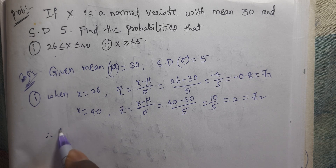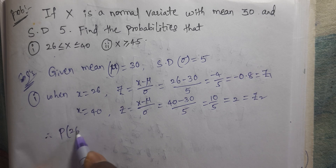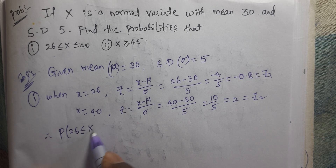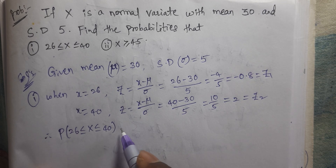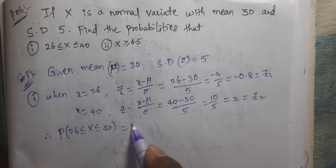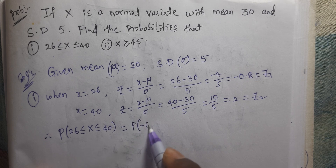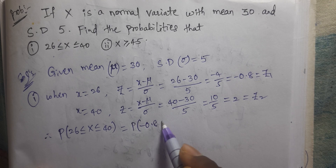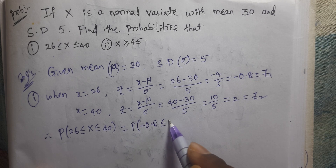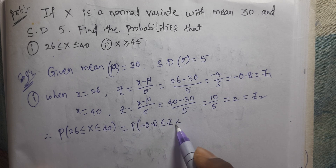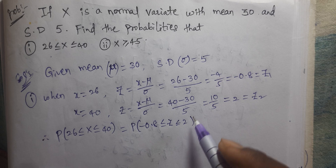Therefore, probability of 26 less than or equal to capital X less than or equal to 40 is equal to probability of minus 0.8 less than or equal to Z less than or equal to 2.